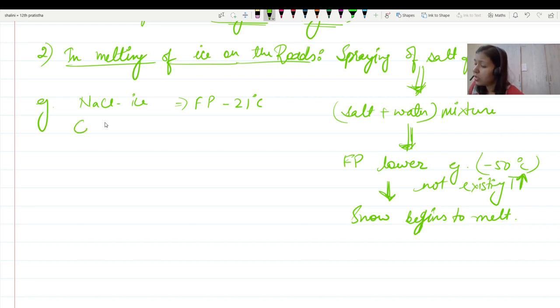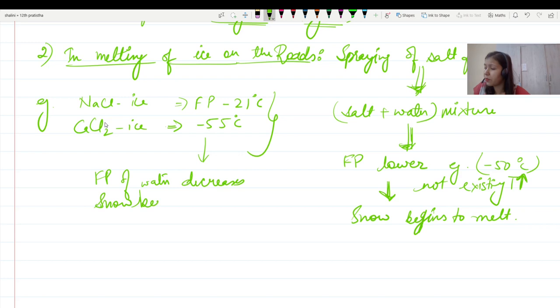Next, let's talk about calcium chloride and ice. If the mixture is made of calcium chloride, it is minus 55 degrees Celsius freezing point. This temperature is not achieved and the freezing point of water decreases, so snow begins to melt.